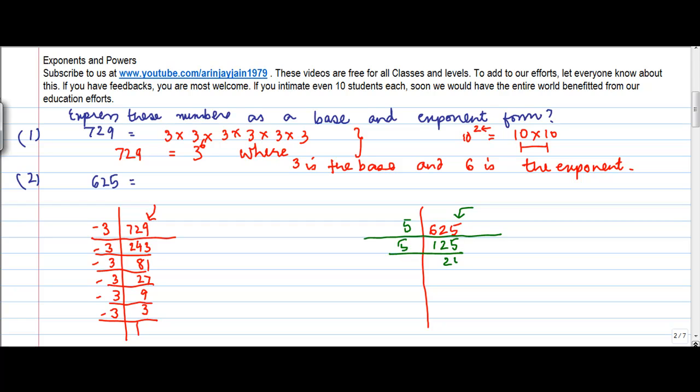5, 25. I do this again by 5. I get 5 here. I do this by 5. I get 1 here.